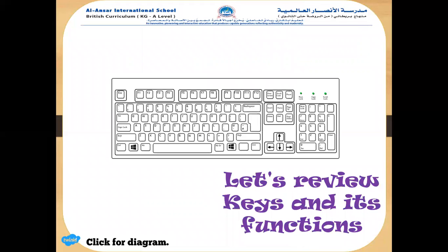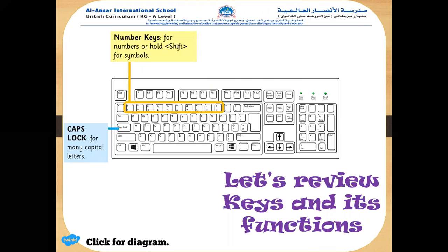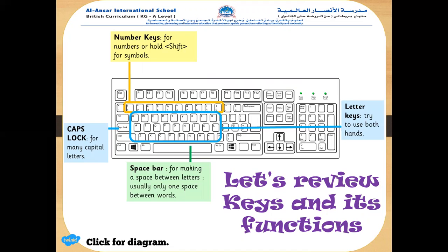Let's review keys and their functions. The Caps Lock key is for capital letters. Number keys are for numbers. You can press Shift to create symbols. Letter keys — you can type them using both hands. Spacebar key is for making a space between words — usually one space. Backspace key deletes your mistakes backwards, and the Delete key deletes your mistakes forwards.